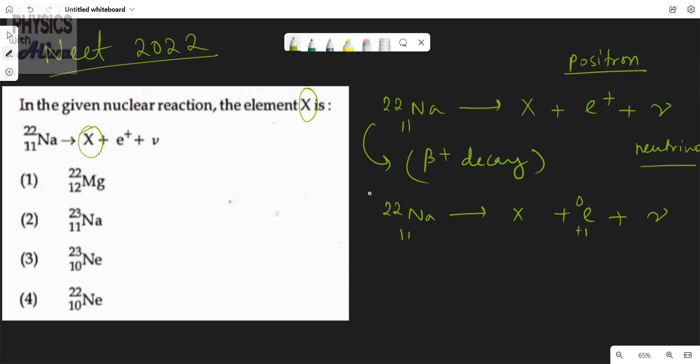Neutrino is neutral. So from here we can see that this is 11, we don't know what is this. Suppose we are writing this a and b, so this is a and this is plus 1. So the equation, as we know the conservation of Z and conservation of A, we can write 11 is equals to a plus 1, so a is equals to 11 minus 1, that is 10.